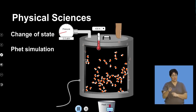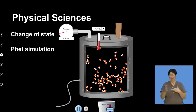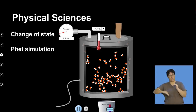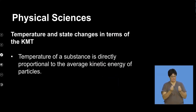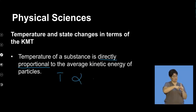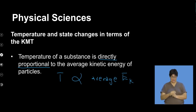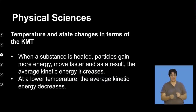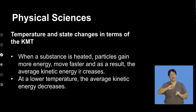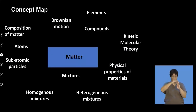When we heat particles of any substance, they gain kinetic energy — some will have comparatively greater energy, some lower — but the average kinetic energy has a direct relationship to the temperature of the substance. Temperature is directly proportional to average kinetic energy (EK). At a higher temperature, the average kinetic energy is greater, and vice versa. When a substance is heated, particles gain more energy and move faster, increasing average kinetic energy; the opposite is true when a substance is cooled.